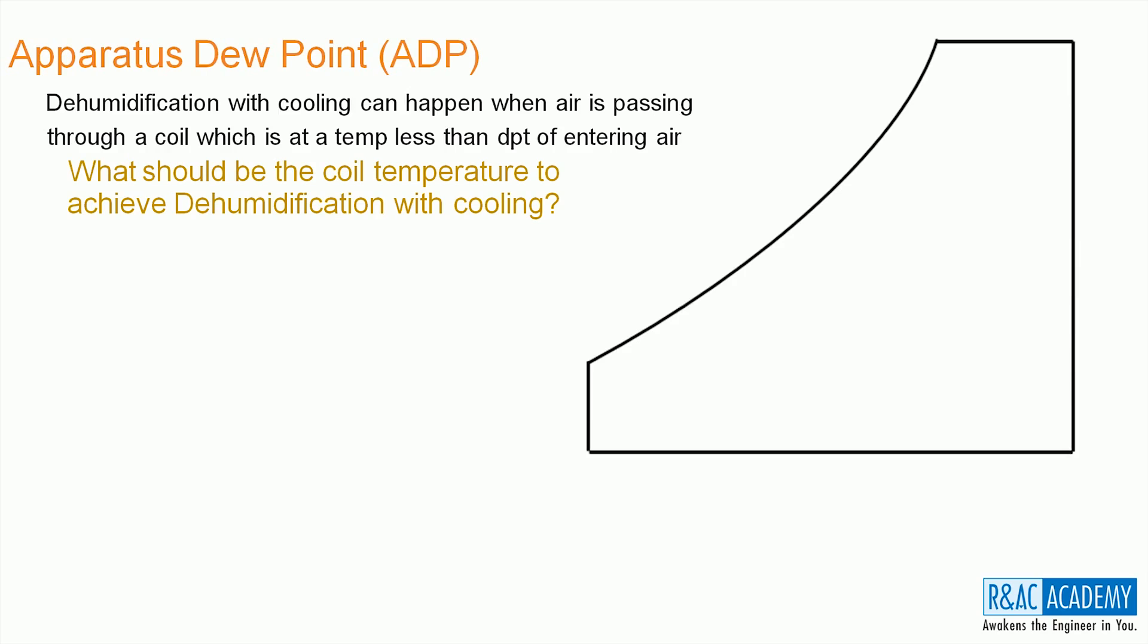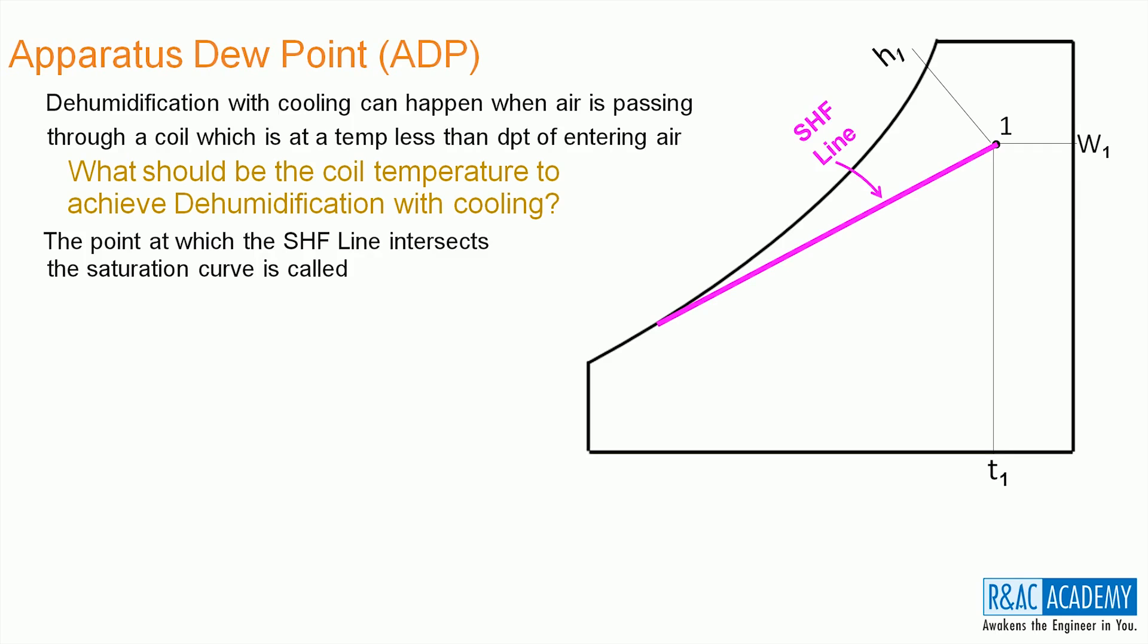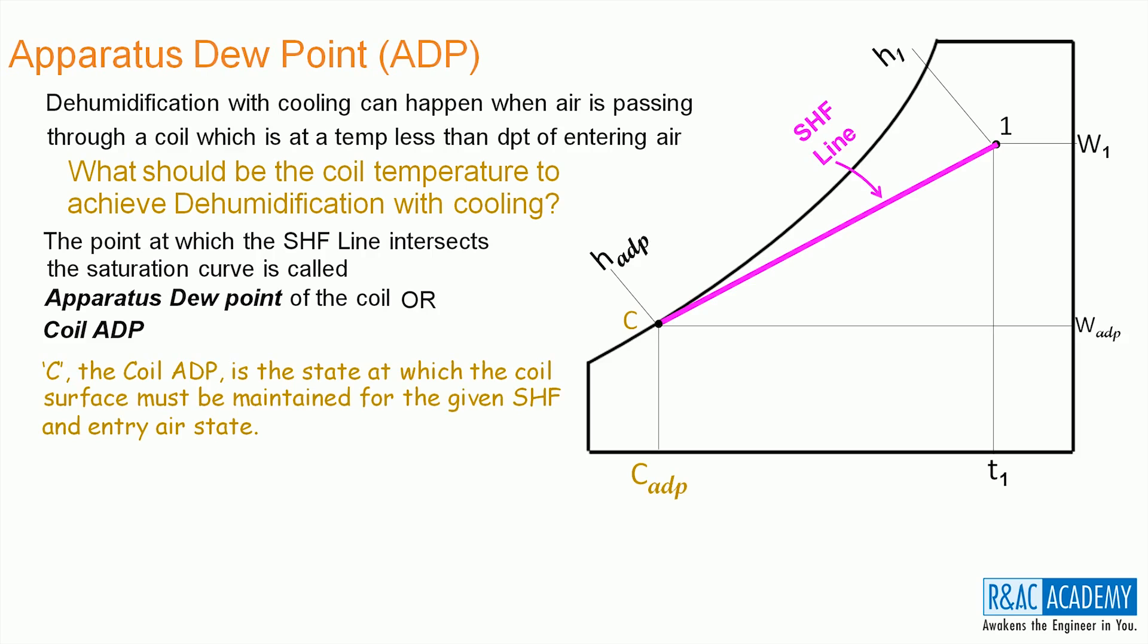Let me explain this process. Let 1 be the state of the air at coil entry and T1, W1 and H1 be the properties corresponding to state point 1. Let us now draw the SHF line starting from 1 until it intersects the saturation curve. The point at which the SHF line intersects the saturation curve is called the apparatus dew point of the coil or simply coil ADP. Therefore, for the given SHF and entry air state, the coil ADP is the state at which the coil surface must be maintained in order to achieve the required dehumidification optimally.